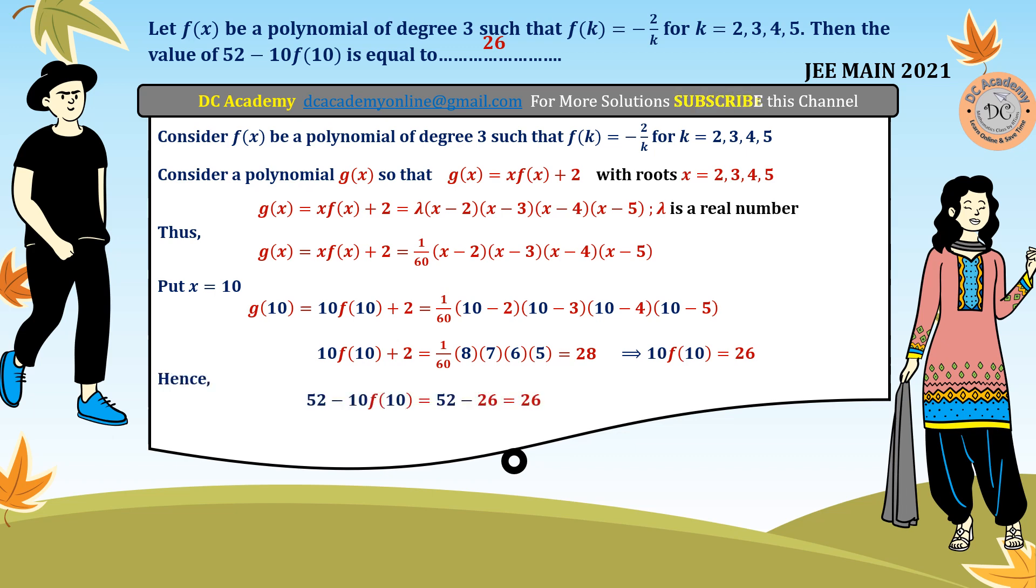So the remaining steps are very straightforward, just substituting and getting that. So here, the trick is that from the equation f(k) equals minus 2/k, we have to think that we have to construct a polynomial g(x), which is in the form of xf(x) plus 2. So if we're able to construct and if we're able to think in that way, the problem is very straightforward. Hope you understood the problem. Thank you.